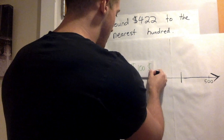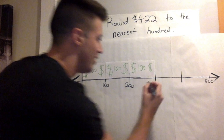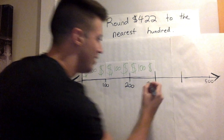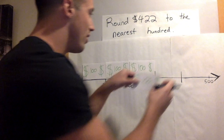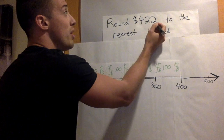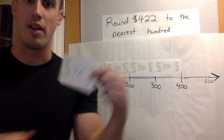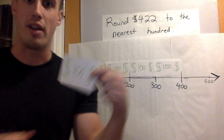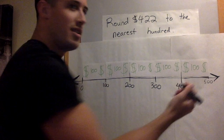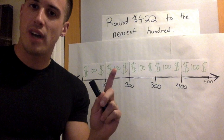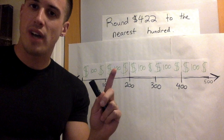Now I have another $100 bill — put it here. I have one, two, three hundred. Another $100 bill — I see $400 up here. That's almost enough money to give my mom, but it says $422, so let me put up another $100 bill. Now it says 500, so I have five $100 bills.